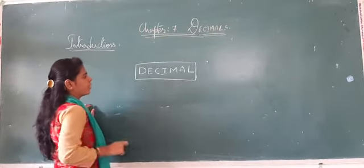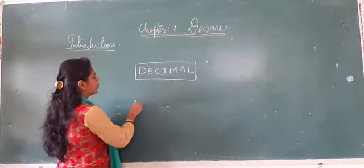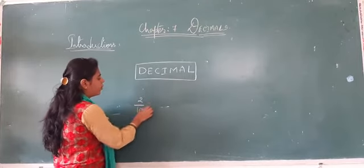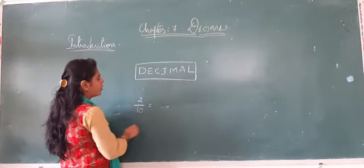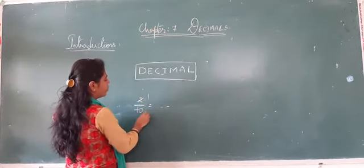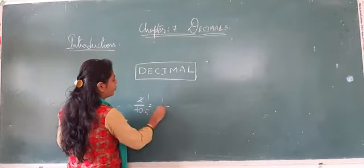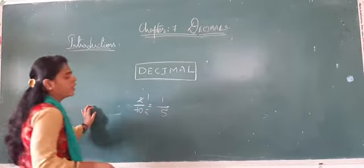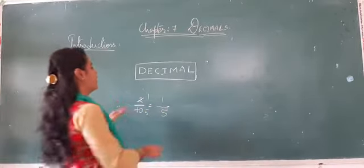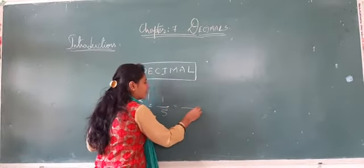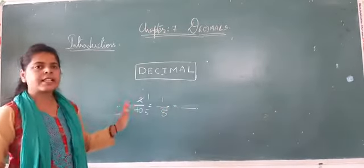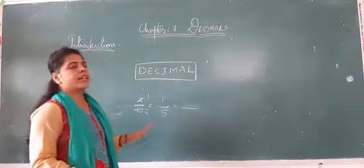As I already said, if a number like 2 by 10 is given, you can simplify it to its simplest form — 1 by 5. Now, if you convert this fraction 1 by 5, the answer will be expressed as a decimal.